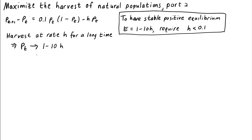If the population size P sub T goes to 1 minus 10 times H, how much do we harvest? Well, our harvest is just H times P sub T. So that's just H times 1 minus 10 times H.